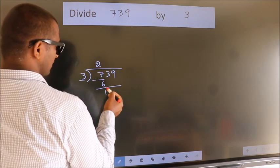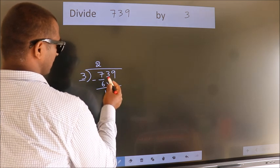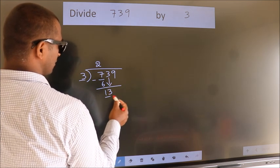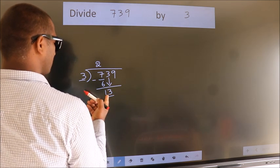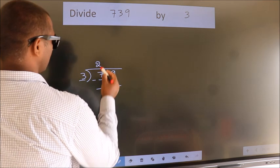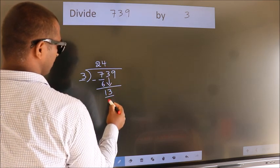After this, bring down the beside number. So, 3 down. So, 13. A number close to 13 in 3 table is 3 times 4 equals 12.